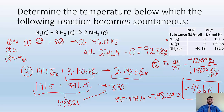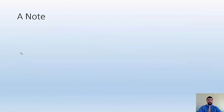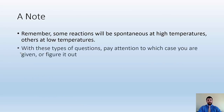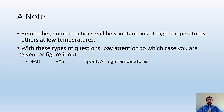This is as hard as it gets for this topic. Sometimes they just give you delta H and delta S and it's straightforward. Remember: some reactions are spontaneous at high temperatures, others at low temperatures. Pay attention to which case you're given. Positive delta H and positive delta S means spontaneous at high temperatures. Negative delta H and negative delta S means spontaneous at low temperatures.